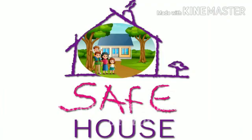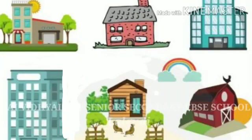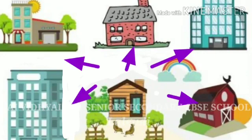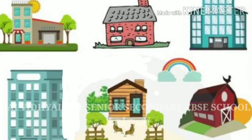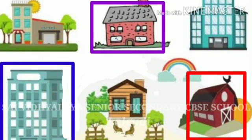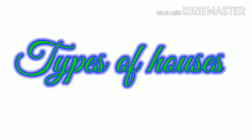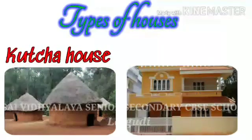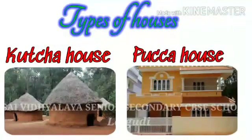People live in different houses. When you visit your friends or neighbors' houses, do you find they have the same type of house as you? No! People live in different houses. Houses can be made of different shapes and sizes, and can also be made of different materials. Let's see the types of houses: kacha house and paka house.